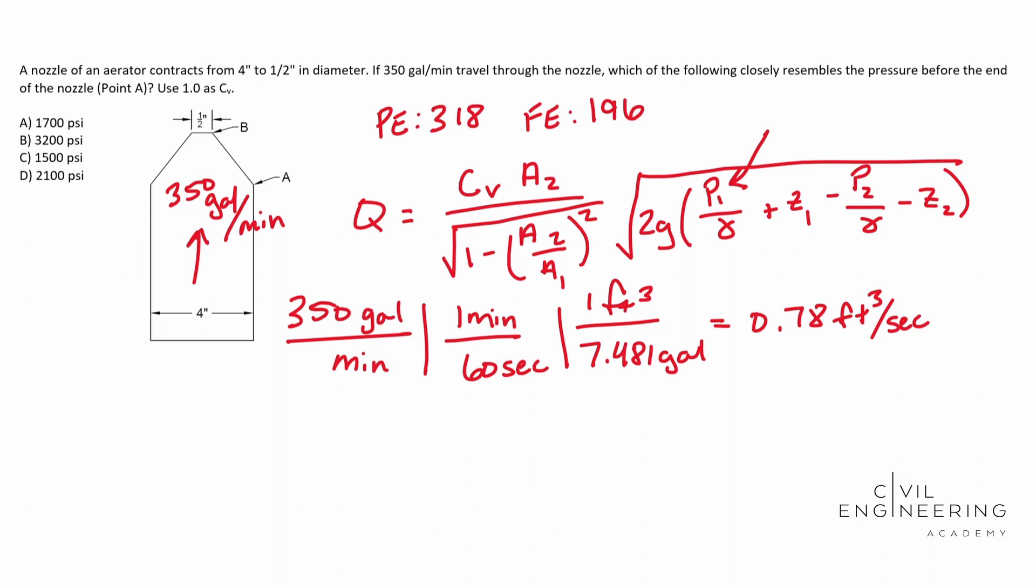So now let's simplify our formula out. Let's plug and chug some stuff in. So you end up with 0.78 cubic feet per second. CFS is equal to our CV. In this case, it says use 1.0. So 1.0 times our area two. Well, this is something that we're going to have to solve for. So your area two, you're just going to do pi d squared over four. So area one, we're going to have to solve for that anyways. And then we have area two.